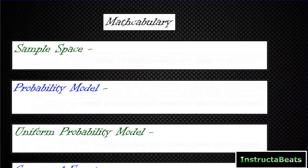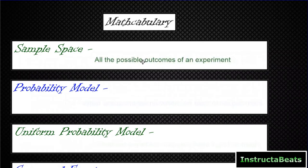But first, let's start with our math vocabulary. We are going to list a few different math terms here, give you the definition, and then show them to you as we do our examples. A sample space is something we've talked about in several of our lessons — it's just all the possible outcomes of an experiment, and typically you write those in brackets.